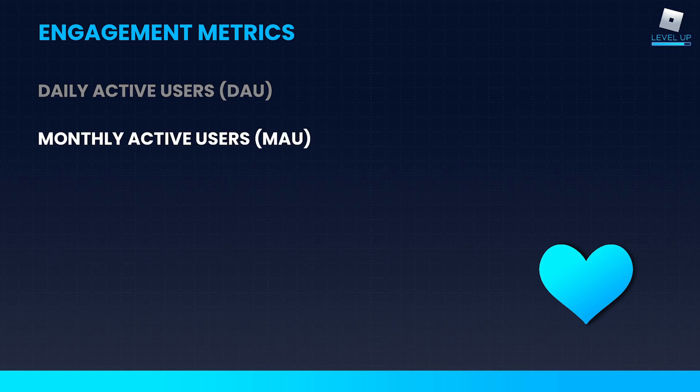Similarly, monthly active users provides a high-level overview of how players are performing month over month. Some months are naturally going to be more popular than others — think October with Halloween or December with the holidays. But you can use this to compare those months year after year. So let's say last year you had 50,000 users in your game, and this year you only have 30,000 — that's an indication of how your game is trending, and something you can react to.